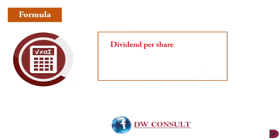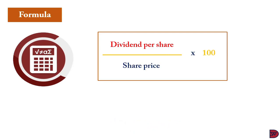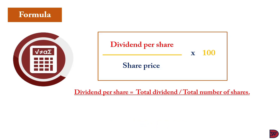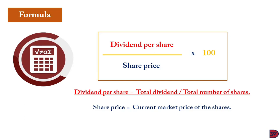The formula for dividend yield is: dividend per share divided by the share price, multiplied by 100. Dividend per share is the total dividend declared by the business divided by the total number of shares in existence. The total dividend can be found in the financial statements. For the total number of shares, if you have access to the registration document that is easier; otherwise, visit the equity section of the statement of financial position — the ordinary share column — and divide the value by the share price. The share price is the current market price, which for publicly traded companies is found on the stock exchange or online.